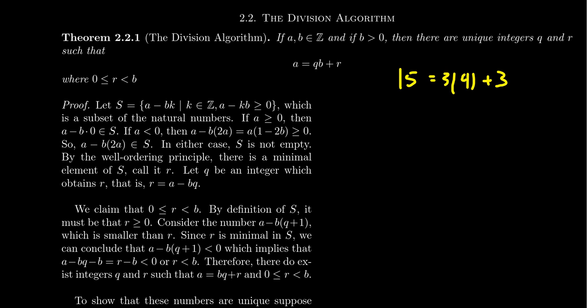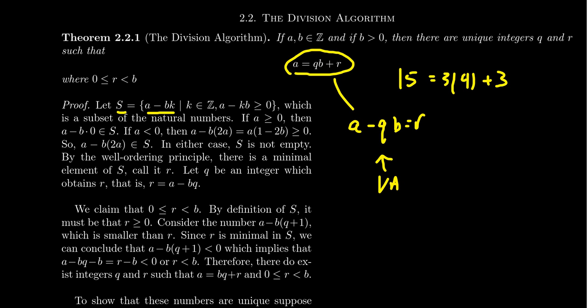Let's first establish that the division algorithm is a valid statement by going through its proof, which is an application of the well-ordering principle from the previous lecture. To apply the well-ordering principle, we come up with a set of natural numbers and invoke it to get a minimal natural number inside that set. The set we're going to work with is the set of all differences of the form A minus BK. If you think of our equation, the idea is to move the QB to the other side: A minus QB equals R, and we allow Q to vary — that's where the symbol K comes into play.